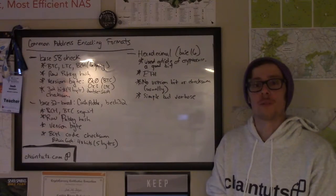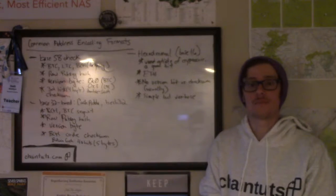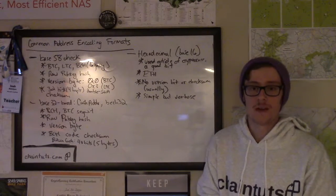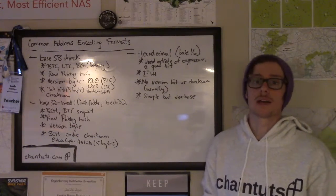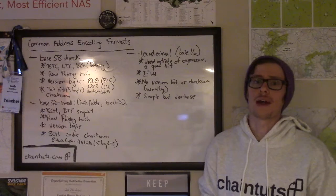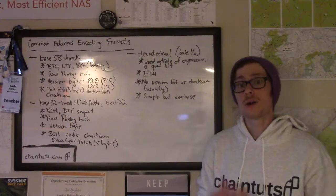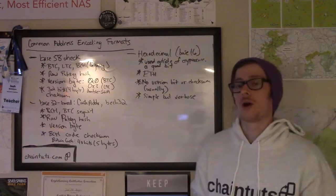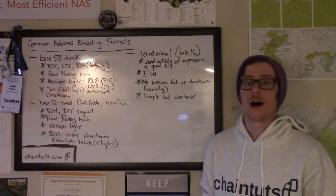Hey everyone, this is Josh with another Bitcoin and blockchain tutorial available at ChainTuts.com. For today's tutorial, we're going to be discussing address encoding formats. When you use a cryptocurrency to send funds to somebody else, you send those funds to their public address. If you're not familiar much with cryptocurrencies, this address might just look like a random string of garbage — just numbers and letters that don't seem to mean much. We're going to talk today about how those addresses are actually derived and what encoding formats are used to create the final string of letters and numbers that you see in your wallet.